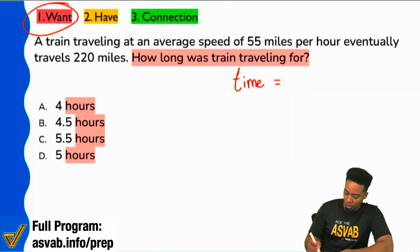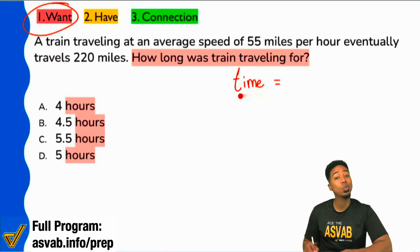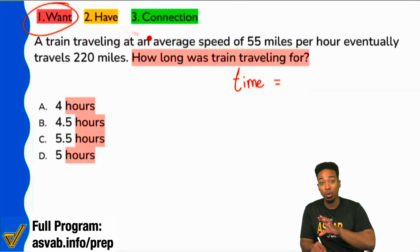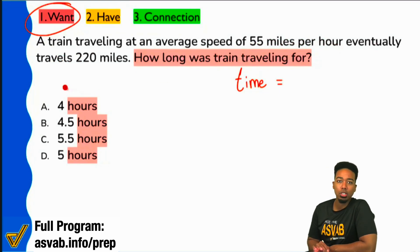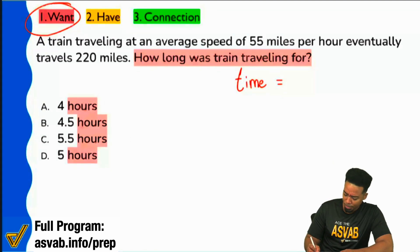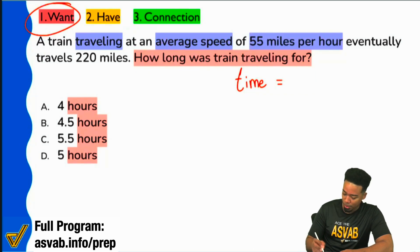We'll begin over here by reading the actual information, knowing that whatever it is that we read, we're trying to make some sort of connection between whatever this is and time. We see that a train is traveling at an average speed of 55 miles per hour, eventually travels 220 miles. We had two numbers there.